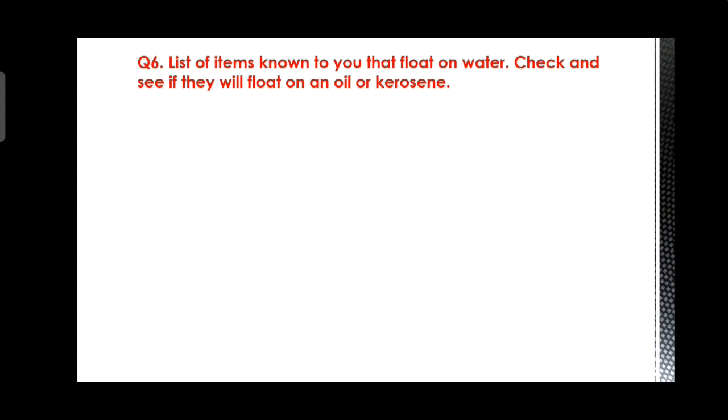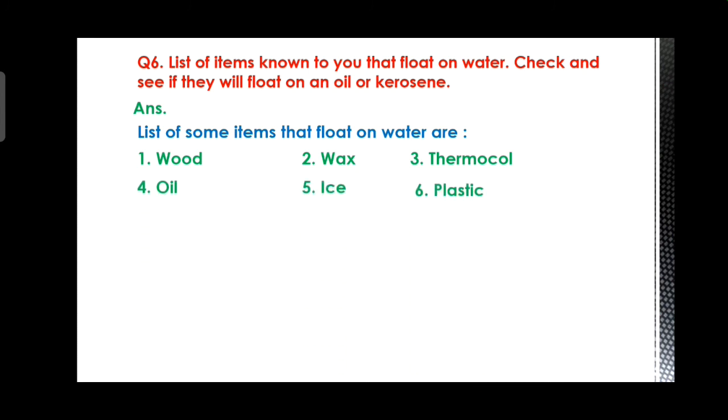Next question: list all items known to you that float on water. Check and see if they will float on an oil or kerosene. Answer: list of some items that float on water are wood, wax, thermocol, oil, ice, and plastic. List of items that float on oil or kerosene are wood, paper, wax, plastic, and thermocol.